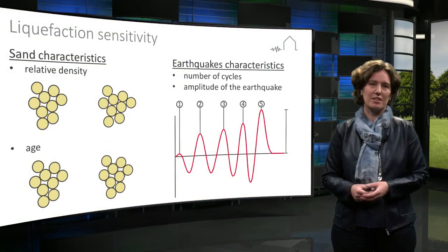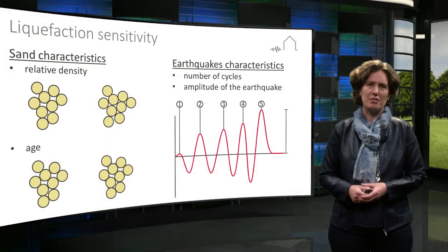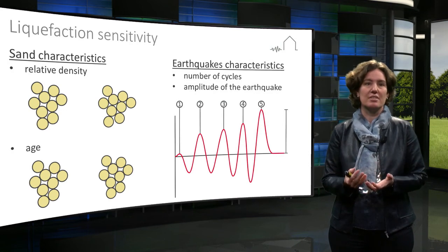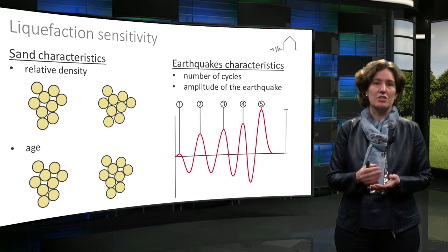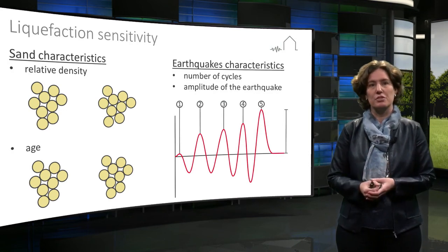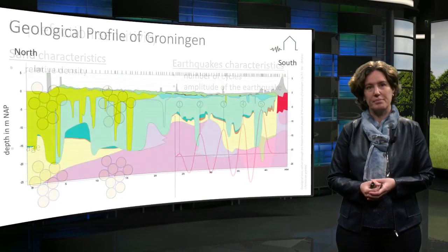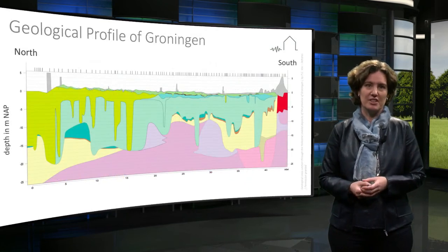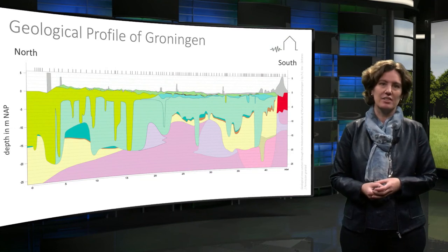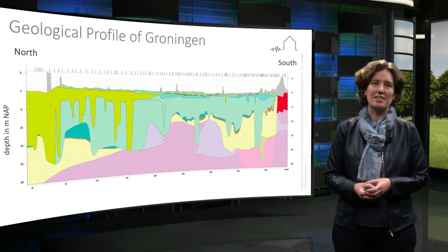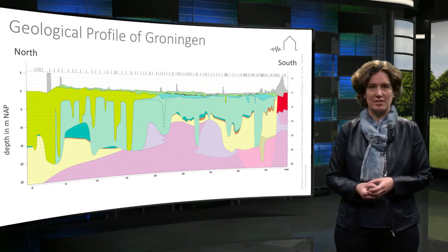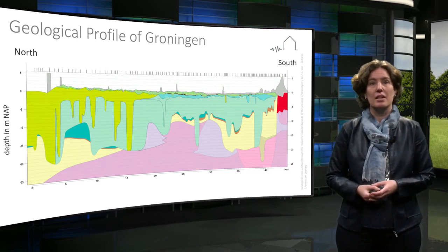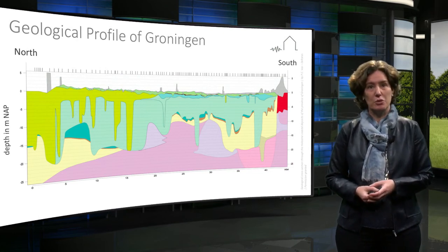The amount of liquefaction that can occur depends on several factors, such as the density of the sand, the age of the sand, and the number of cycles and amplitude of the earthquake. By looking carefully at the geology and the presence of sand layers, it is possible to predict whether liquefaction is a risk or not. For Groningen, most of the loose sands are found in the north of the area.